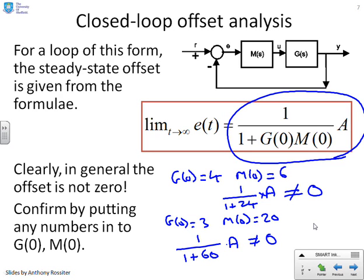So you'll notice if you put finite numbers into G of 0 or M of 0, you will always get an offset. And that's a very interesting observation. So if the steady state gain of G is bounded and the steady state gain of the compensator is bounded, then you must get an offset in the steady state.